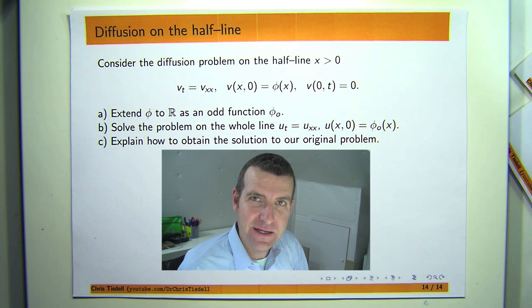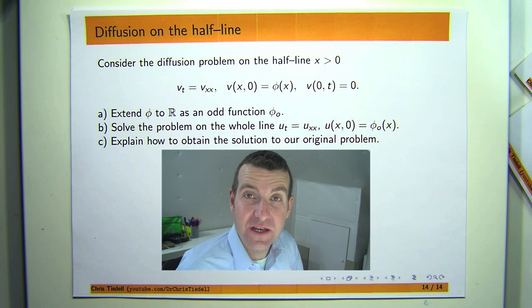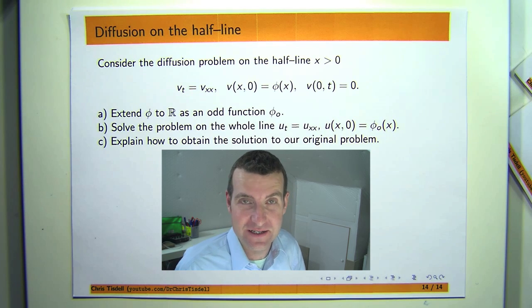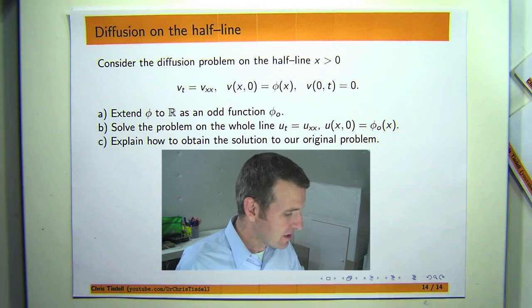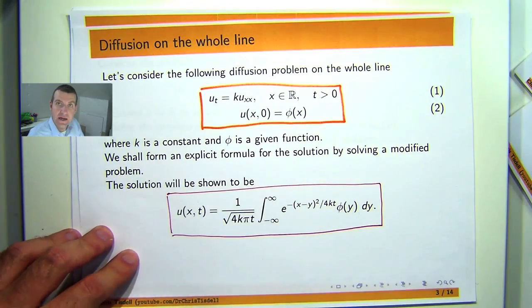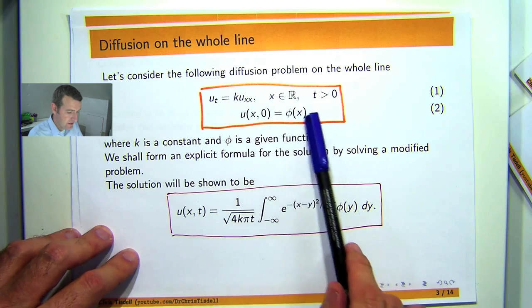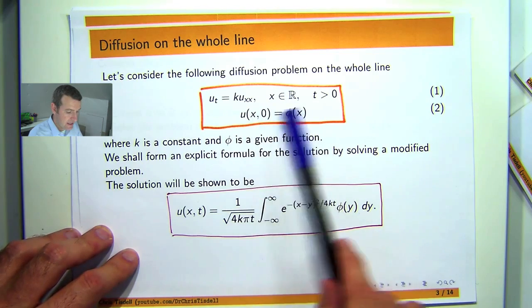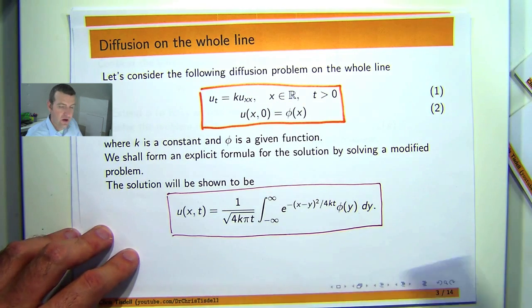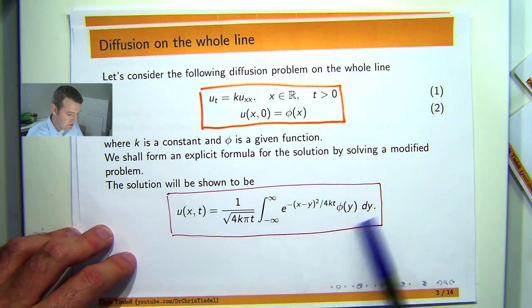Hi again everyone, Chris Tisdell here. In this presentation I'm going to continue my series of videos on partial differential equations. In previous videos we've been looking at the diffusion or heat problem in one spatial dimension with some initial data, solving it on the whole real line for the spatial variable. We showed that the solution was a known formula.